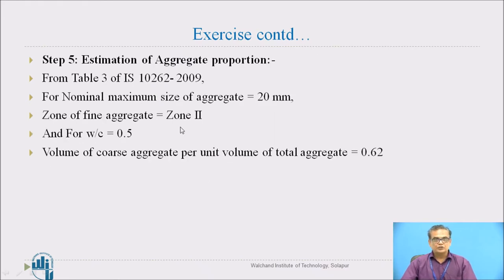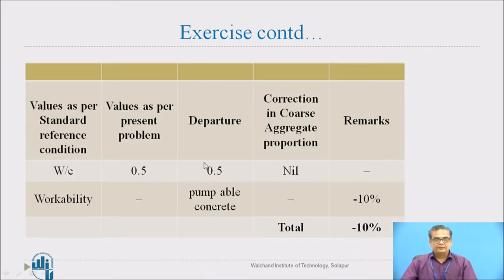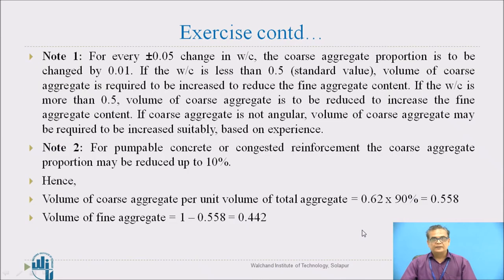Estimation of aggregate proportions for Zone 2 sand: for a water-cement ratio of 0.5, the volume of coarse aggregate per unit volume comes to be 0.62. Workability considerations require corrections to aggregate proportions. For every plus or minus 0.05 change in water-cement ratio, the coarse aggregate proportion is to be changed by 0.01. These adjustments are given in the code and are to be applied.